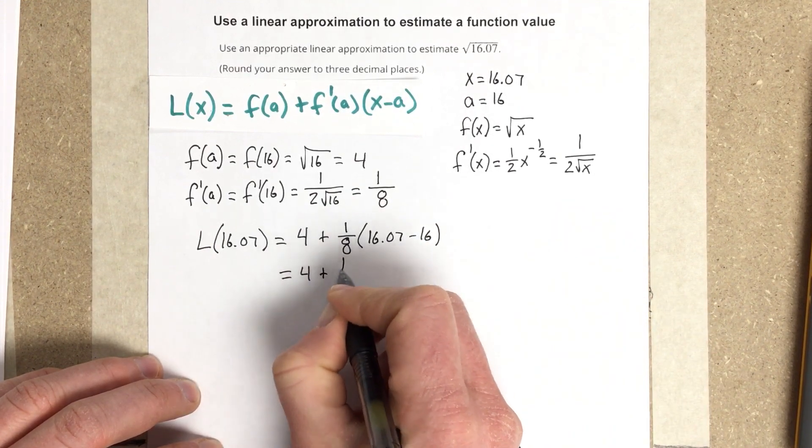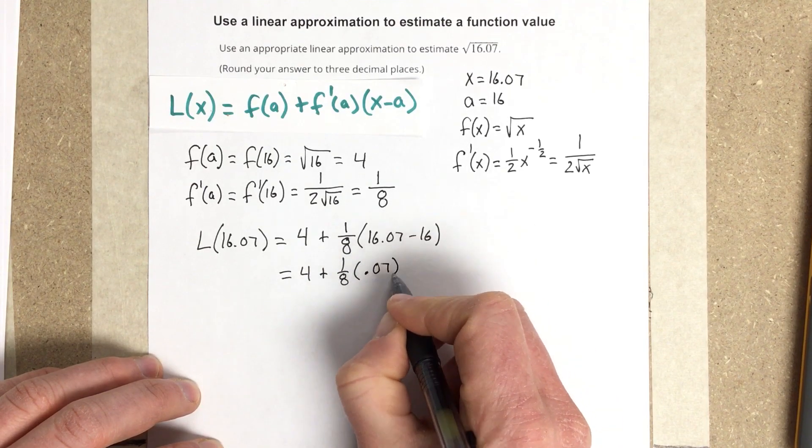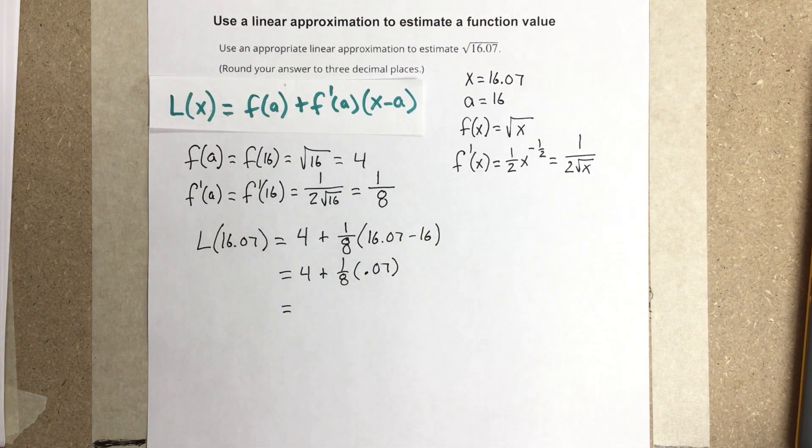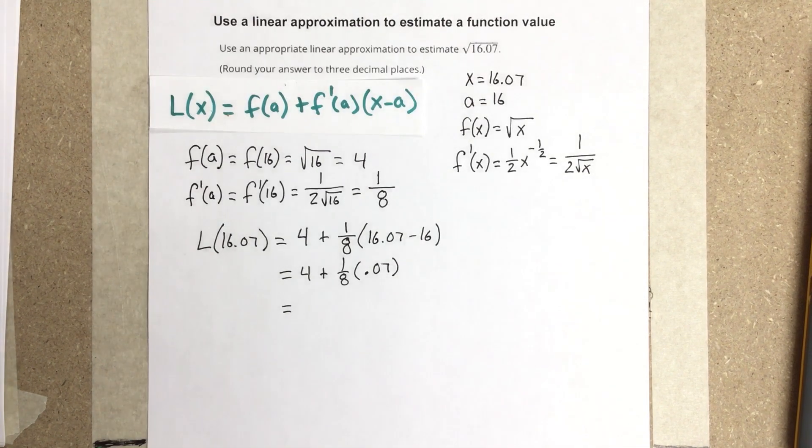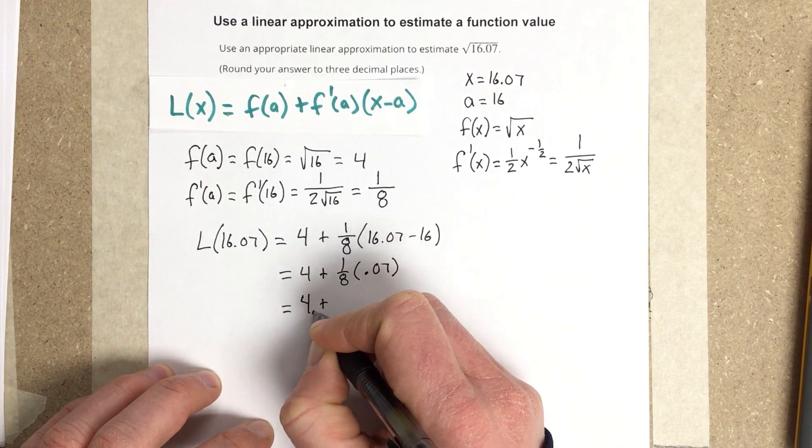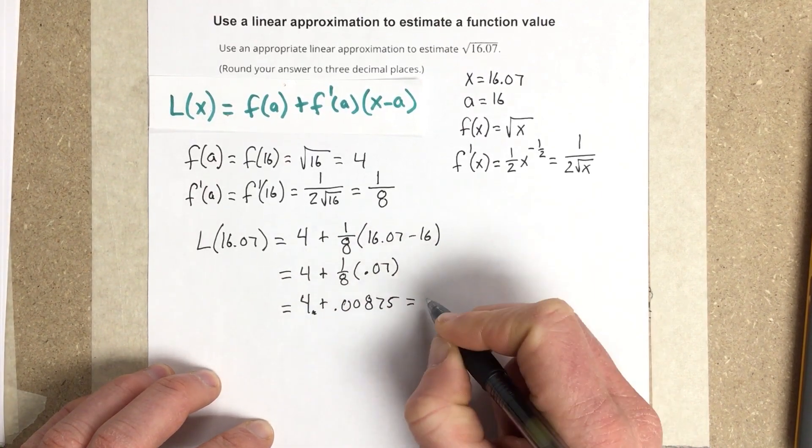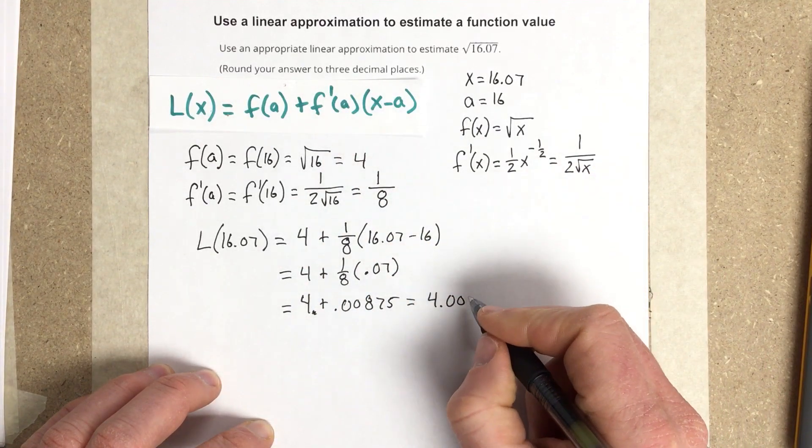So I end up with 4 plus 1 eighth, and I subtract these, I get 0.07. So now I'm going to multiply those together. We get 1 eighth times 0.07. I get 4 plus 0.00875. So I end up with 4.00, they say round your answer to three decimal places, so that's 4.009.